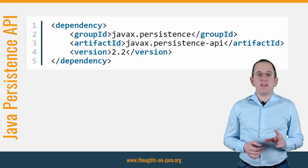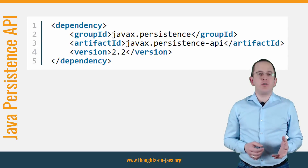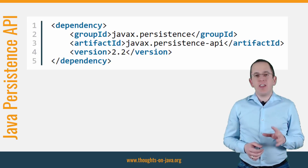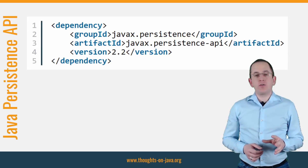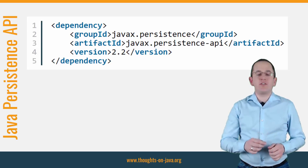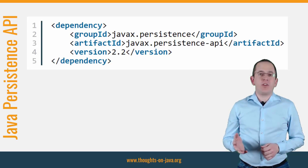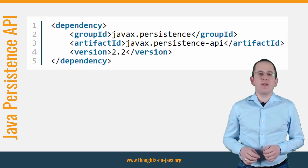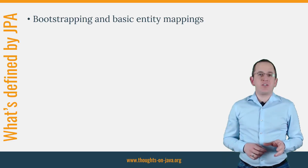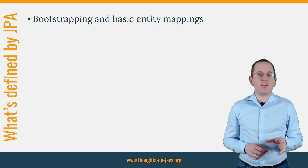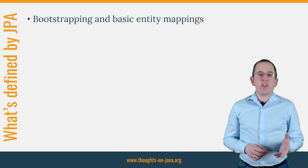Until recently, JPA was managed and developed by an expert group following the Java Community process. That changed when Oracle announced to transfer all Java EE specifications to the Eclipse Foundation. We are now in the middle of the transition process and a new specification process will be defined soon. The specification defines most of the features that I explained on my blog and in the videos on this channel. You can use them with all compliant JPA implementations.